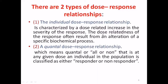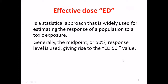The dose relatedness of the individual response often results from an alteration of a specific biochemical process. The second type is the quantal dose-response relationship, meaning 'all or none.' At any given dose, an individual in the population is classified as either a responder or a non-responder.